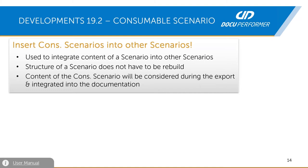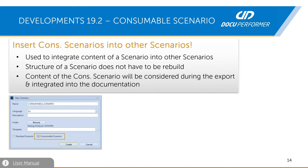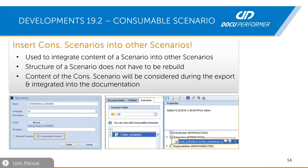For example, if you created several scenarios for sub-applications and want to add them into one scenario, you can mark those as consumable scenarios and bundle them all in a standard scenario and document it. The chapter structure and assigned objects will be considered during the export and integrated into the documentation. You can define the type in the scenario settings, and in a standard scenario there is a new tab where you can select all the consumable scenarios. All existing scenarios built in previous versions become standard scenarios, and the type can be changed via the context menu.